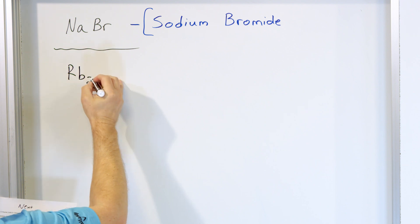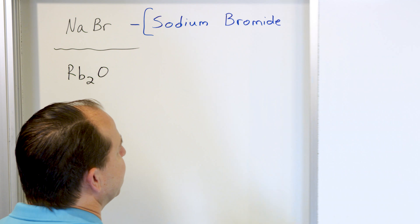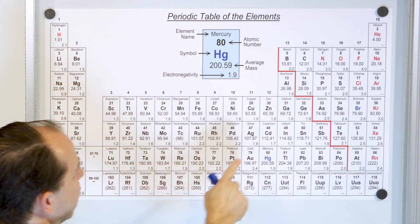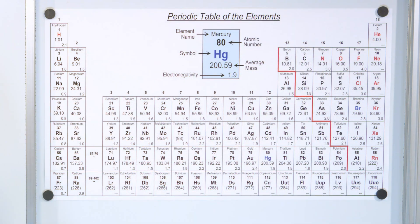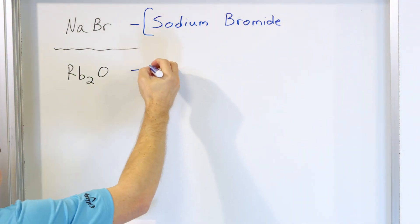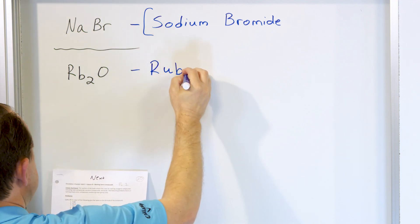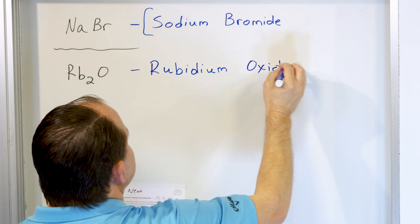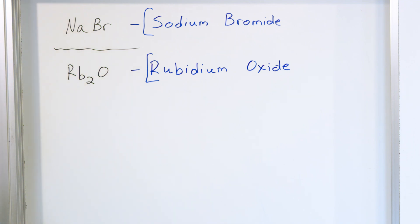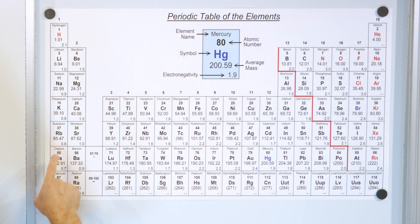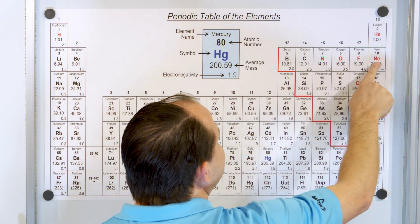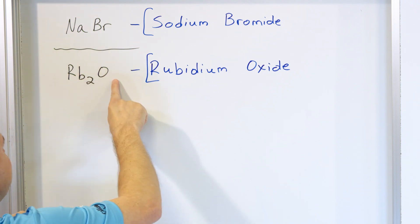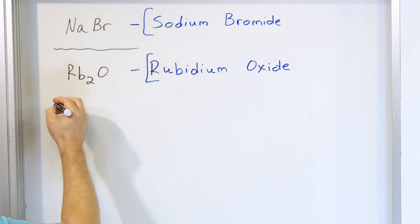Let's look at Rb₂O. RB on the periodic table is rubidium — it's in column one, same as sodium and potassium. The O is oxygen. It's an ionic compound because it's a metal plus a nonmetal. We write down rubidium for the first element — no changes — and then oxygen becomes oxide, the I-D-E ion name. So the name is rubidium oxide. Let's double check: rubidium should have a charge of plus one since it's in this column, and oxygen should have minus two. When we do the crisscross, the two comes to rubidium's subscript and the one comes to oxygen's subscript — and that's exactly what we have.